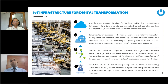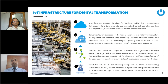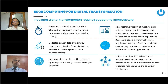The third pillar is the network gateway, which aggregates lots of devices and sensors in a premises to a single point and provides connectivity to the back end — whether a cloud, private data center, or public infrastructure. The fourth pillar is the cloud, which could be an on-premises cloud, a third-party managed data center, or a public cloud such as AWS, Azure, or Google Cloud. These are the four building blocks needed for industrial digital transformation infrastructure.